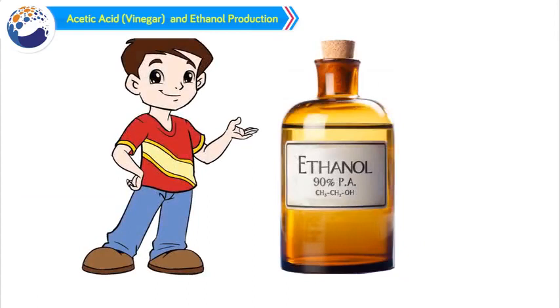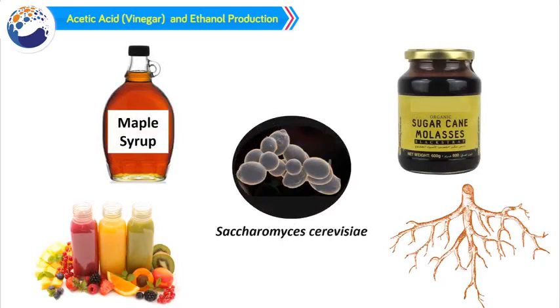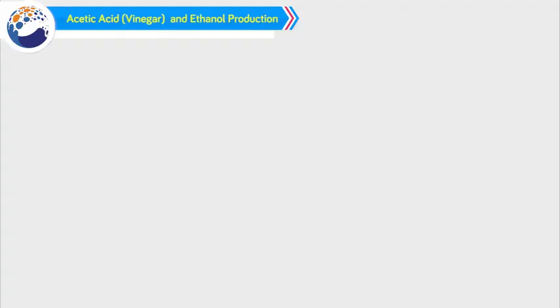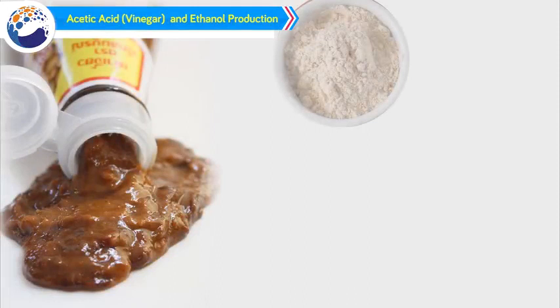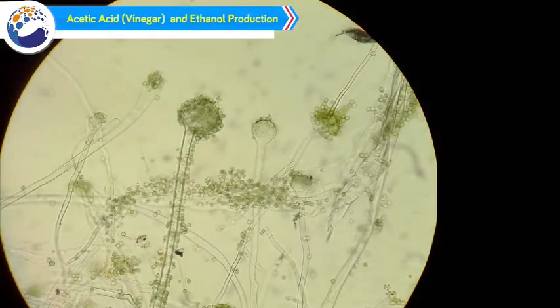3. Ethanol is an alcohol obtained by fermentation of carbon compounds like fruit juices, maple syrup, sugar molasses, starch of the roots with the help of yeast Saccharomyces cerevisiae. 4. Soya sauce is produced by fermentation of the mixture of flour of wheat or rice and soya bean with the help of the fungus Aspergillus oryzae.